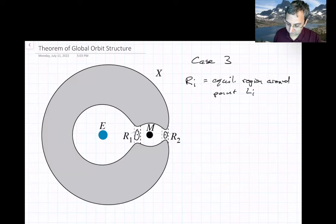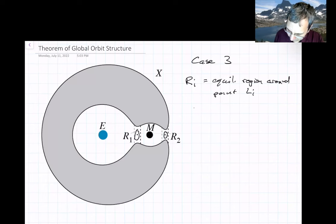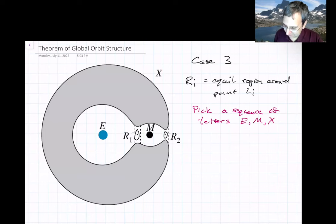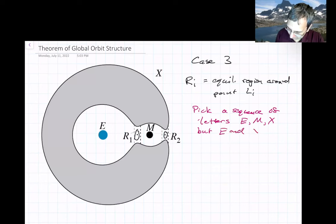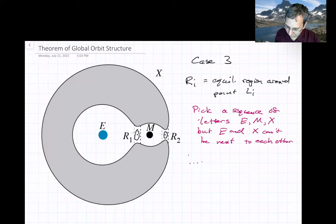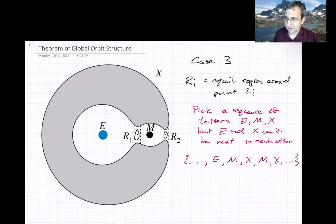Let me tell you what the theorem says. You could write down a sequence of the letters E, M, and X — but E and X can't be next to each other. So any sequence you could write, for example E, M, X, M, X, etc. Any sequence of those letters with the rule that E and X can't be adjacent.